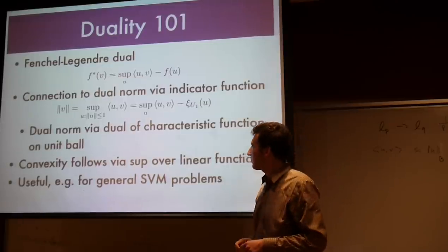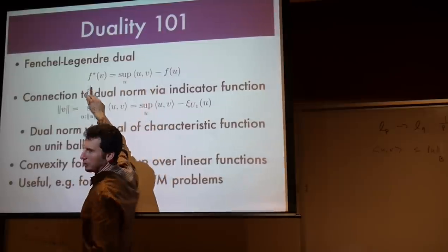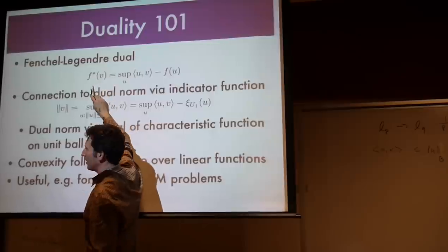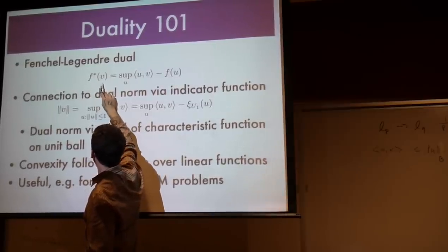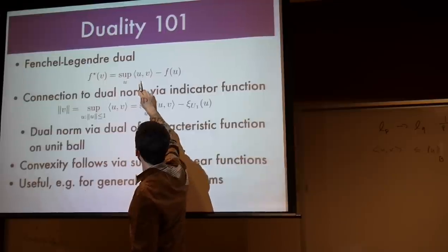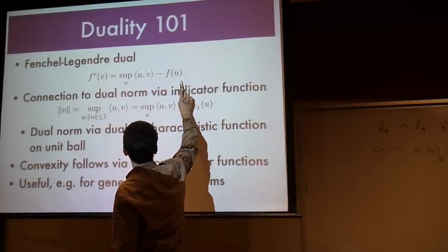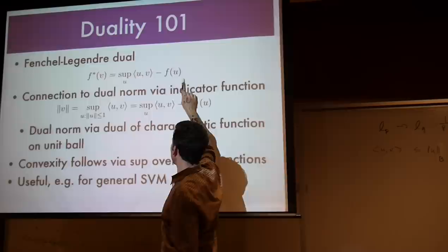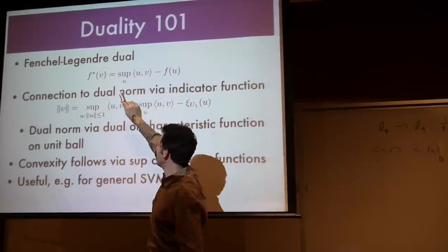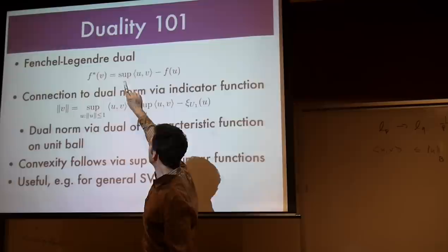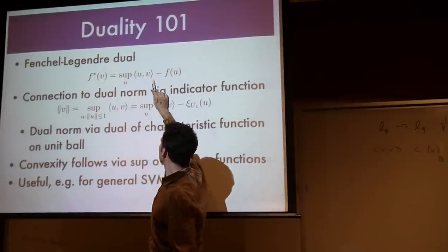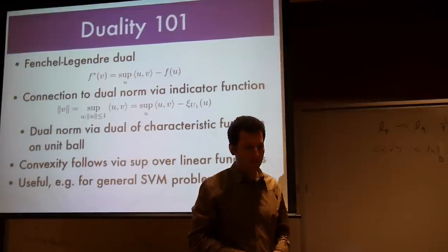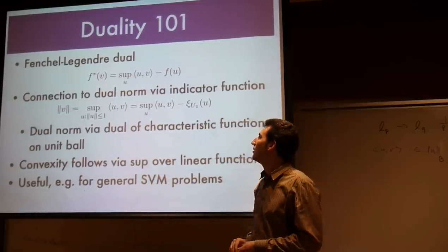Let's just briefly introduce the Fenchel-Legendre dual. This is a quantity that is occasionally quite useful, especially in optimization. So, F star of some function V is the sup over all U of the inner product between U and V minus F of U. Now, if F is convex, then I can possibly solve that problem. Furthermore, you can easily see that F star of V is a convex function. Because for any U, this is a linear function, it's an affine function in V, and by taking the sup over them, it's still convex.